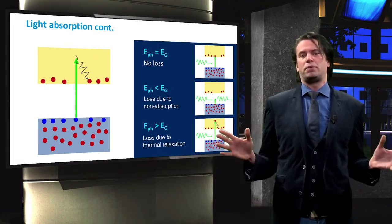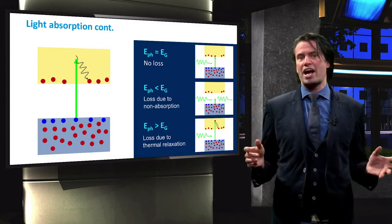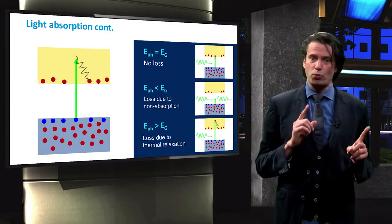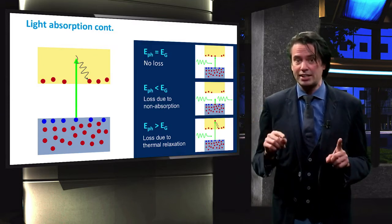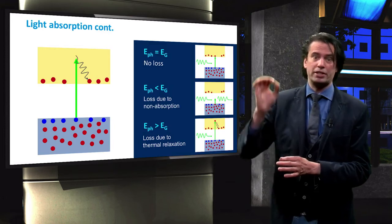To put it simply, if a solar cell absorber has a band gap of 1.1 eV and a photon of 1.6 eV excites an electron-hole pair,